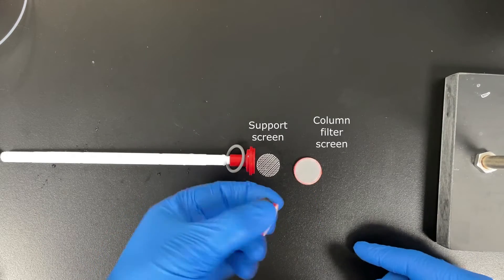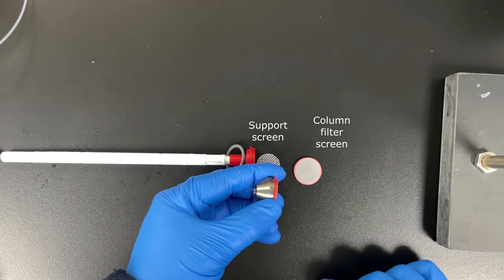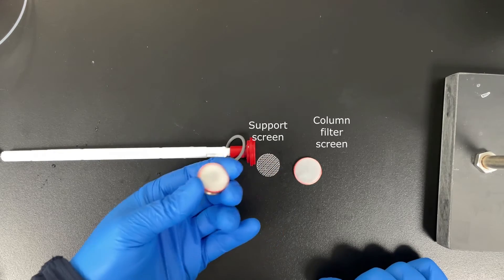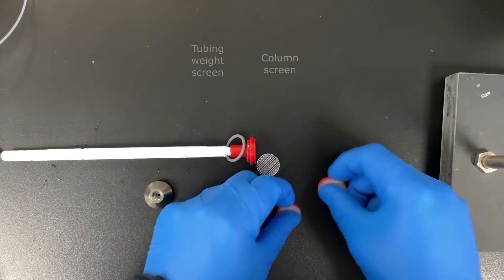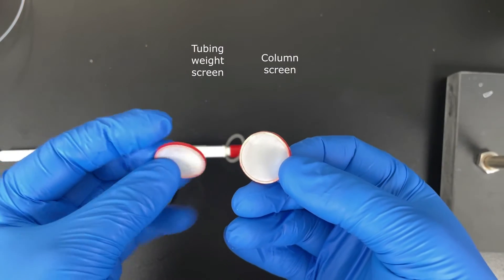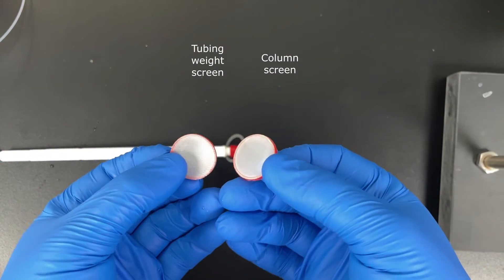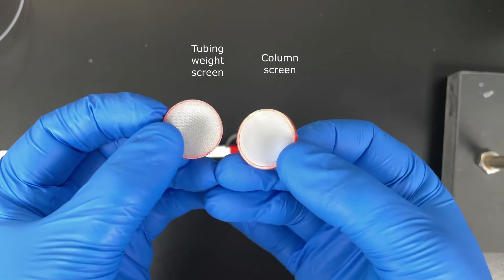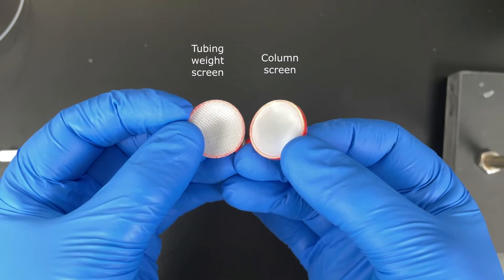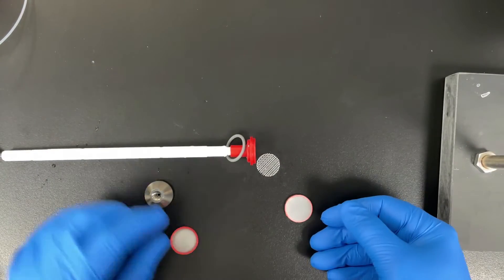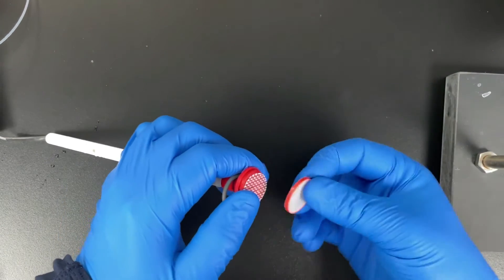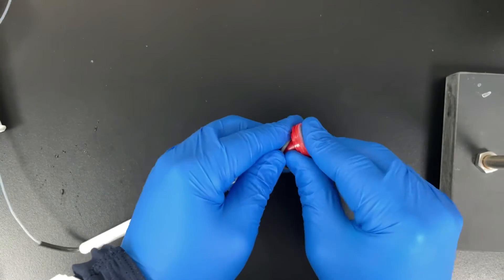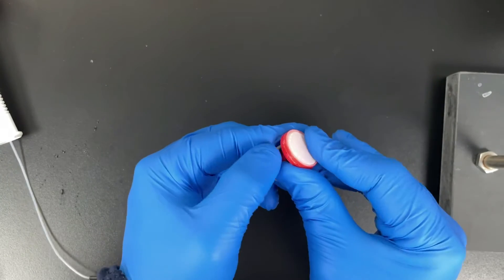You want to be careful that you're not using one of these tubing weight screens. They're the exact same size and look the same way. The tubing weight filter screens won't hold the resin back. You'll notice that the tubing weight screens are a much coarser thread than the column screen. Get rid of any tubing weight screens you might have in the lab so you don't confuse them. I've made that mistake myself.